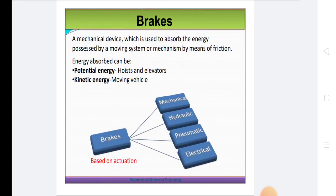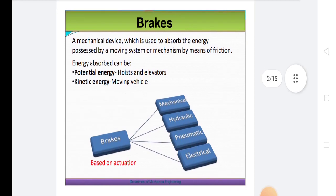The capacity of any brake depends upon the unit pressure between the braking surfaces and coefficient of friction and heat dissipating capacity of the brake. A dynamometer is also a brake but in addition it has a device to measure the frictional resistance.